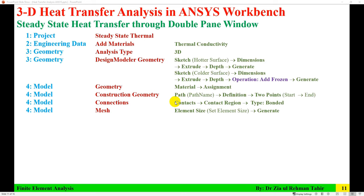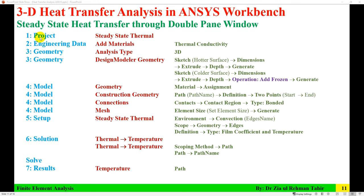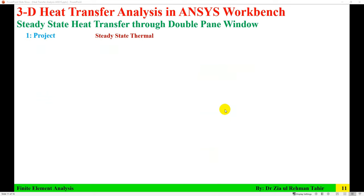Here are the steps outlined for this video. First, start a steady state thermal project. Then in Engineering Data, add materials. Next, in Geometry using Design Modeler, sketch all parts. Then in the Model, assign materials to all components, create a path for temperature distribution, check connections, mesh using a suitable element size, apply boundary conditions (convection on both sides with film coefficient and temperature), insert temperature results, solve, and get results.